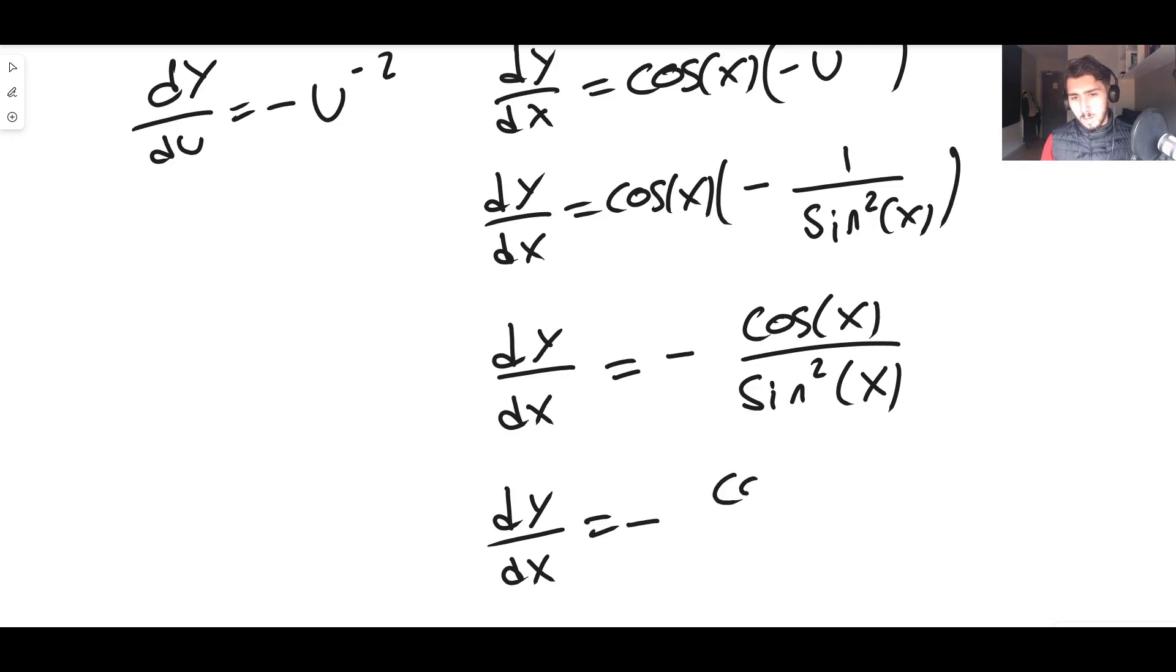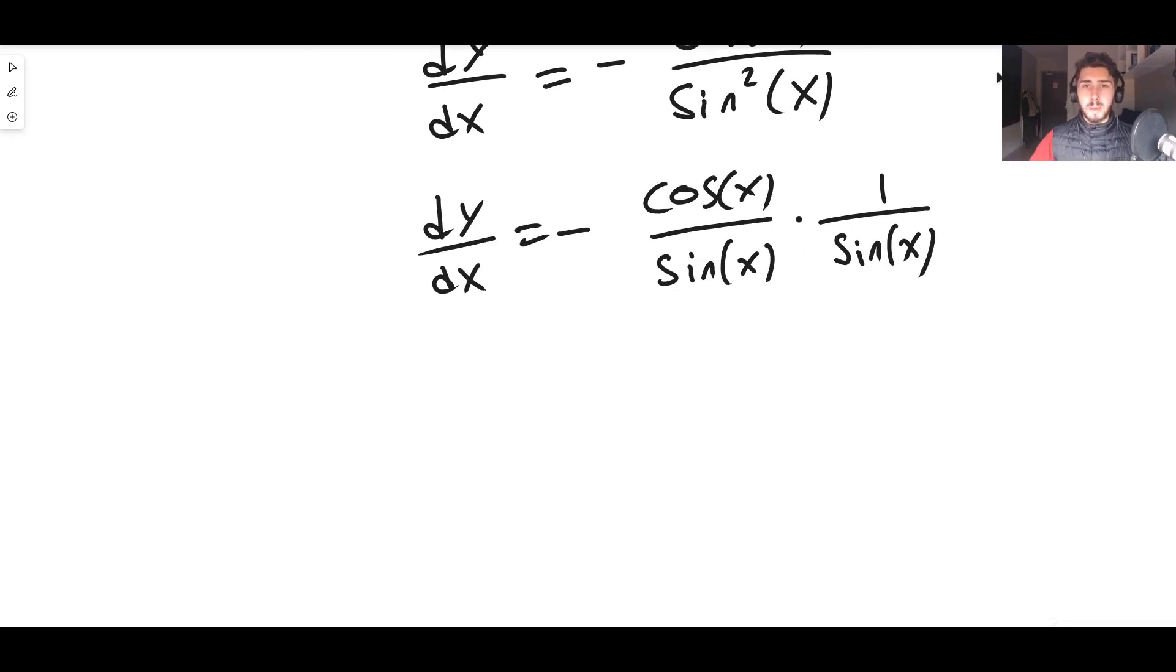We can see clearly that if you were to put this back, you would indeed get minus cos over sin squared. So this is still completely legit, but what it lets us do is say, well, cos(x) over sin(x)—what is that?